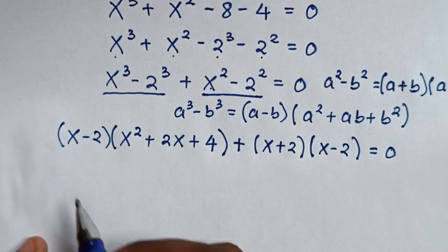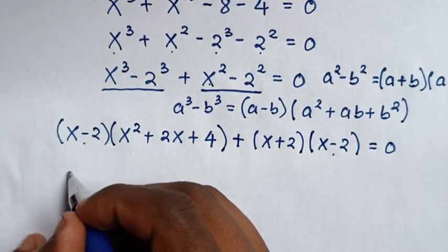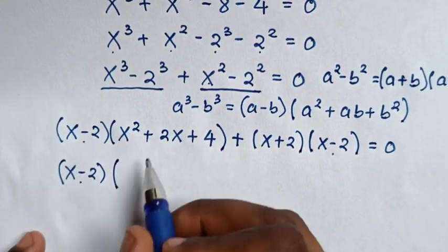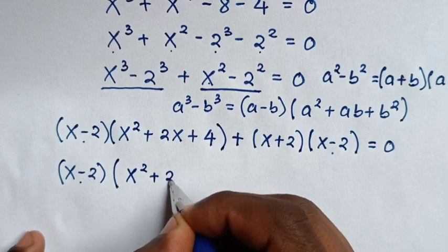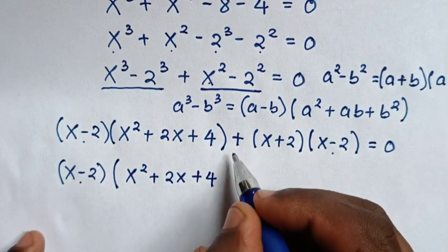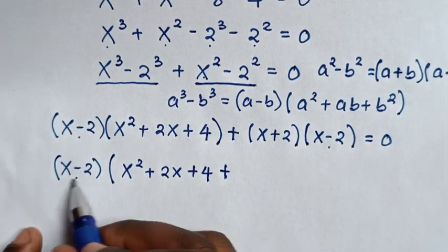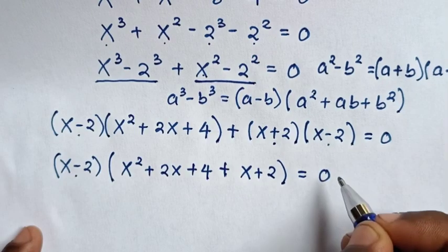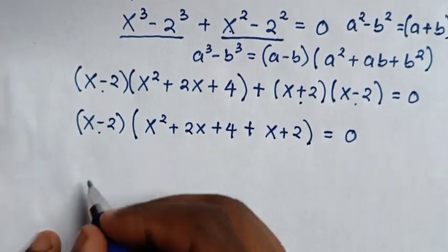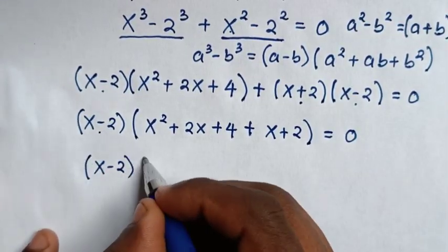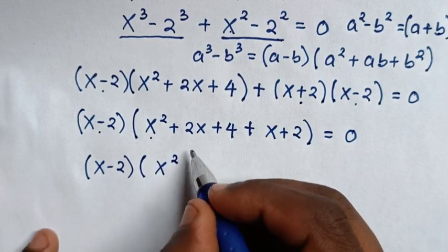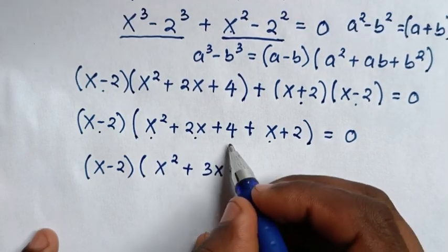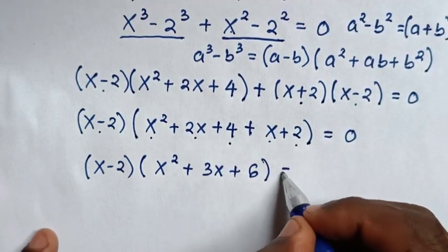In the next step, x - 2 is common, so we factor it out. Dividing gives x² + 2x + 4, and the second part gives (x + 2). Combining like terms: 2x + x = 3x, and 4 + 2 = 6, so it becomes (x - 2)(x² + 3x + 6) = 0.